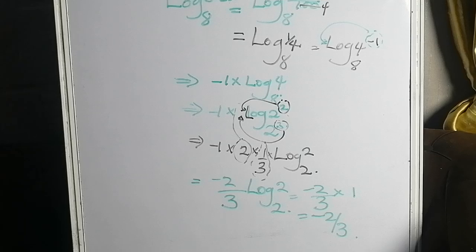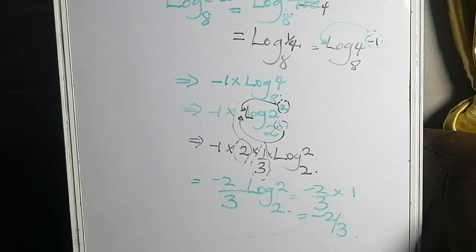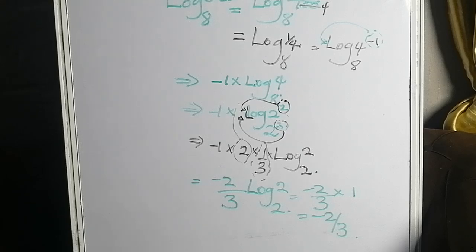So log 0.25 base 8 equals minus 2 over 3. Continue to like, comment, and share — I want to reach students who are having issues with mathematics. Cheers.